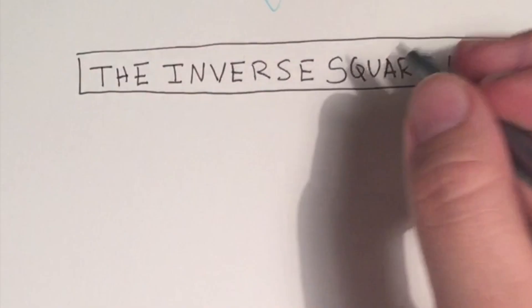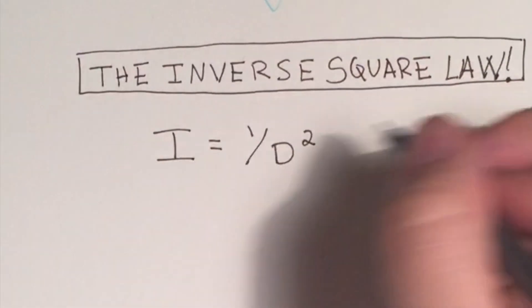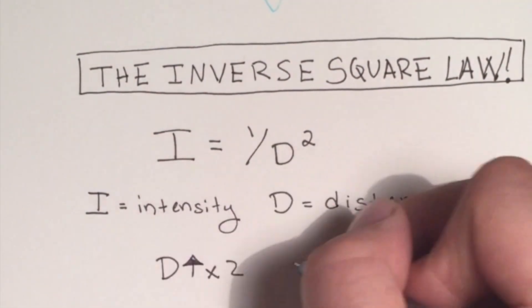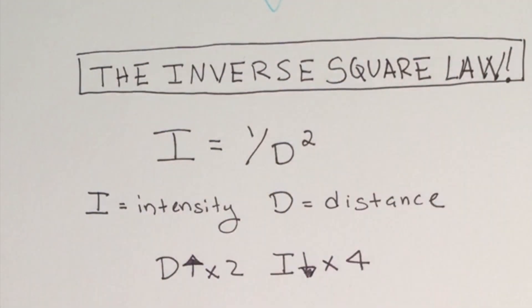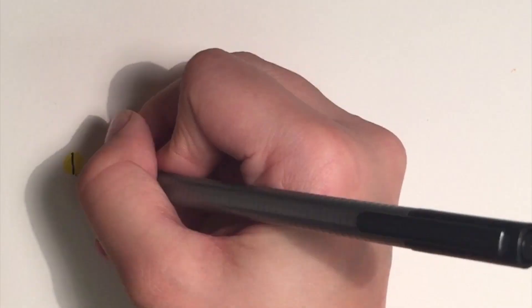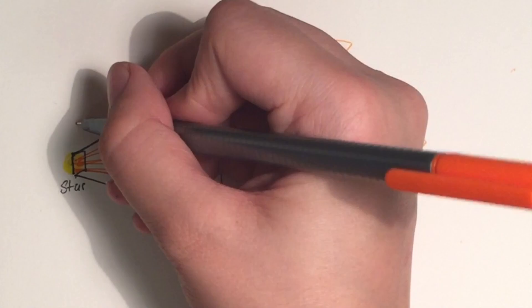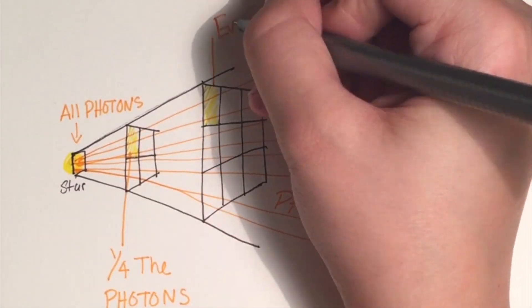Generally written the form i equals 1 over d squared, where d equals distance and i equals intensity, it tells us that if we increase our distance from a light source by a factor of 2, the intensity drops off by a factor of 4. This applies to planets and stars as well. The farther away from the star you are, the less energy you receive. And the less energy you receive, it will be colder.